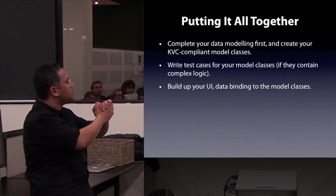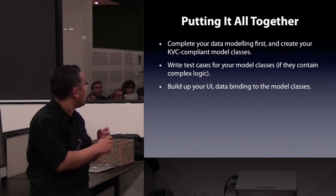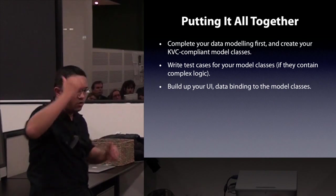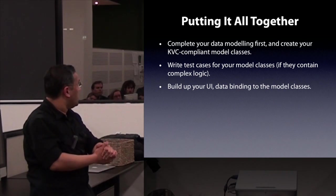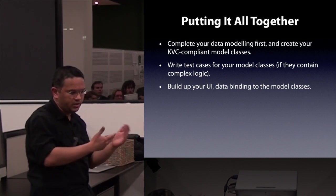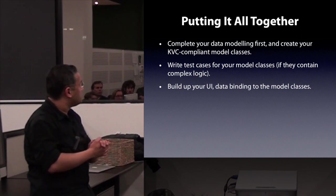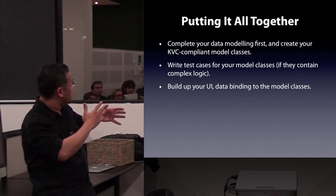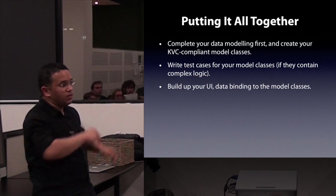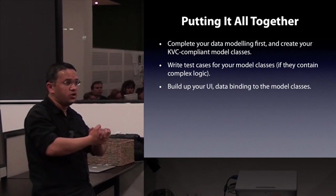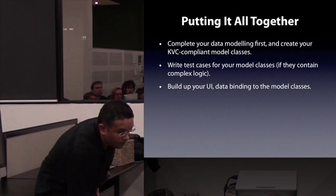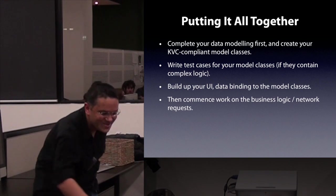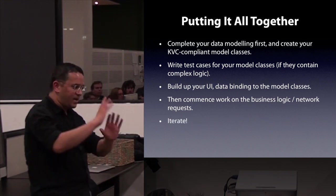For building an IBA Forms-based application, I recommend first doing your data modelling — understand how the different models fit together. Once you know that, build your UI and start binding to the model classes. When you're happy with the UI, if it's a network-based app, start handling the network calls in your view controllers. After that, write test cases for model classes that contain complex logic. Once you've got a basic structure working, keep iterating.